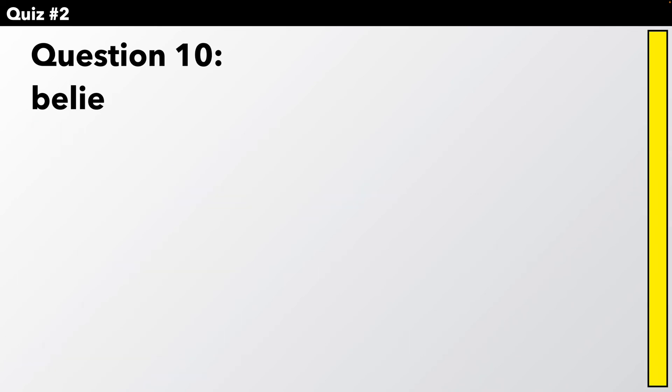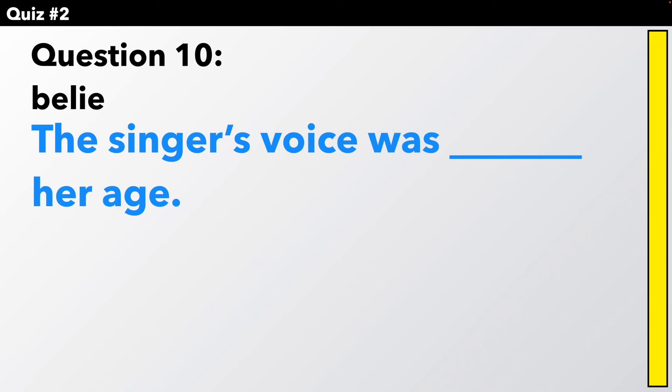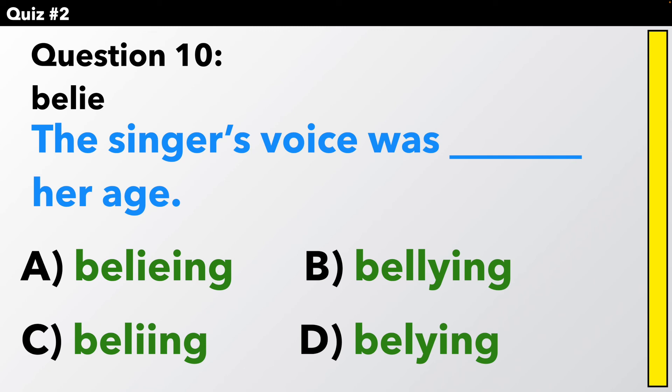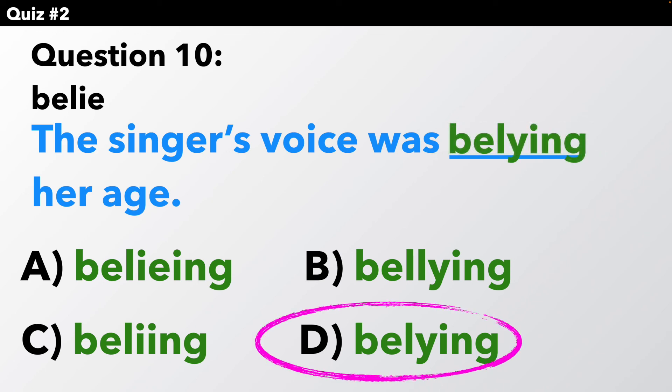Finally, the last question. Question ten. Belie. The singer's voice was belying her age. How do we spell belying? It has an I-E at the end, so we must chop it off and change it to Y. Belying: B-E-L-Y-I-N-G.